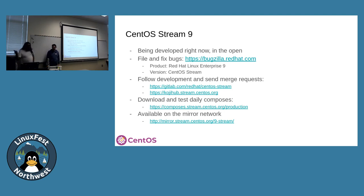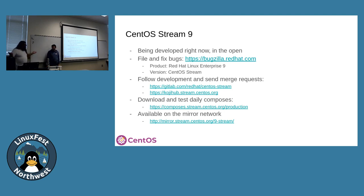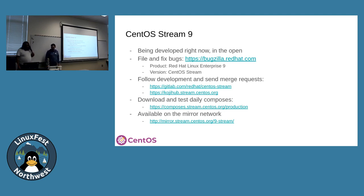CentOS Stream 9 is much the same, except it's actively developed right now — you can download it, play with it, and contribute to it. These slides were originally written when Stream 8 was on the old CentOS Git and Koji instance and Stream 9 on GitLab, but these days everything happens on GitLab and the Stream Koji instance. We don't use Bugzilla for CentOS Stream anymore — it's now Red Hat Jira, which works about the same with the same project names and versions, though some find it more unpleasant to use.